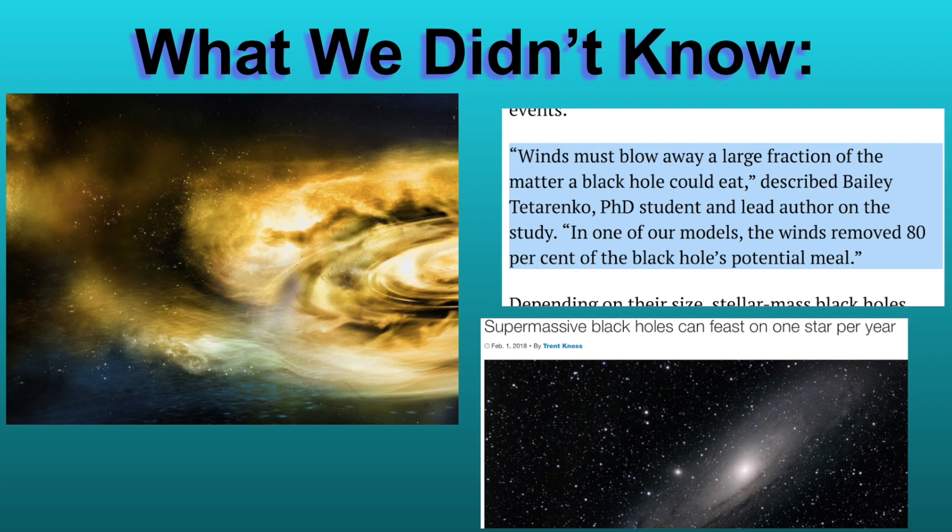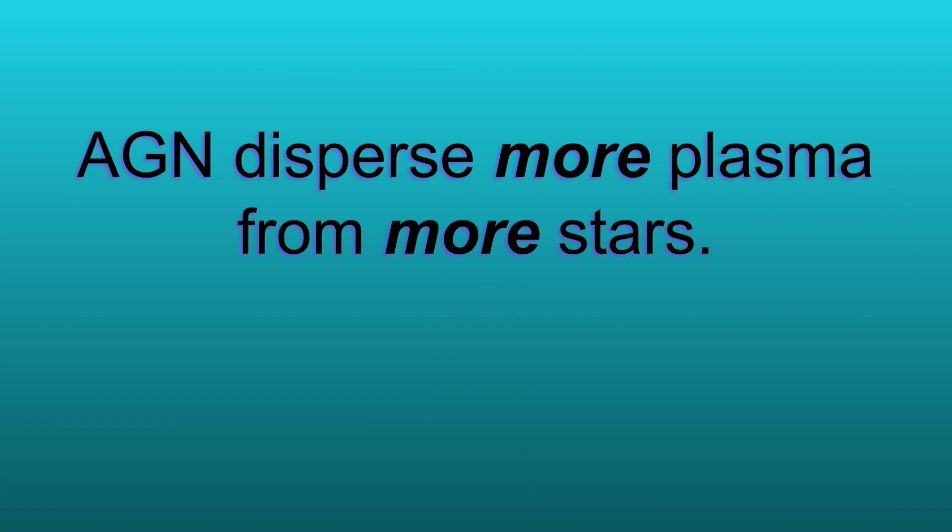And you start to say, well, that's an orders of magnitude change in the right direction for diffuse interstellar plasma in two separate variables. That's starting to look very interesting. And so the simple way to say that is the active galactic nuclei disperse more plasma than we realized from many more stars than we realized in a way that could account for an accretion of the intergalactic medium.